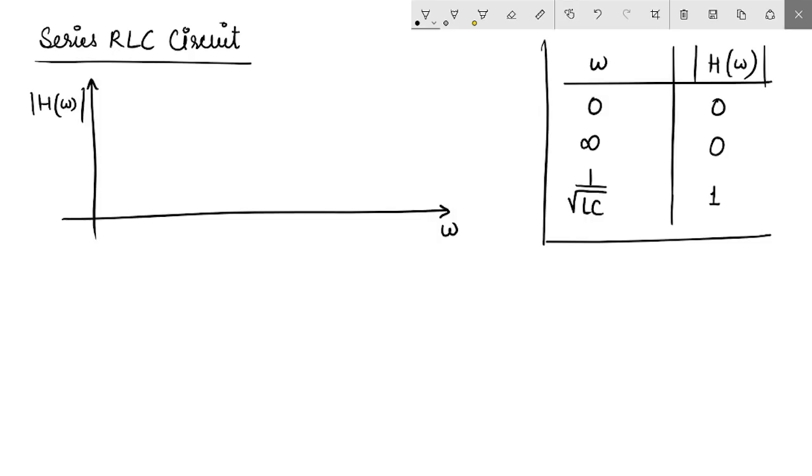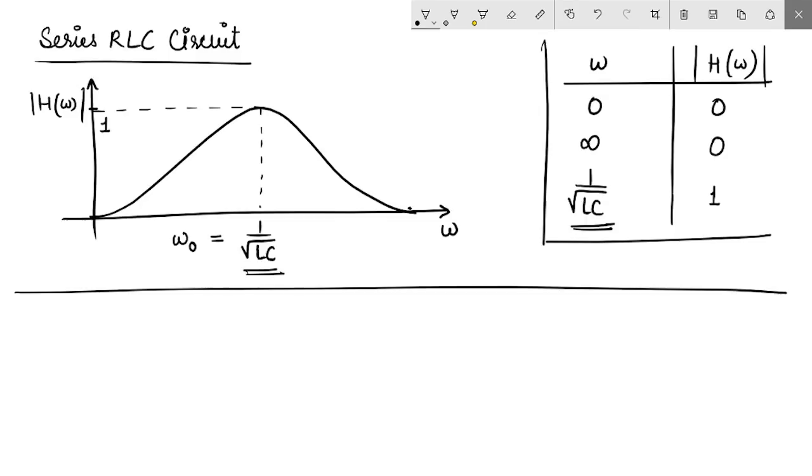So as omega is very less, the amplitude is 0. As omega is very high, the amplitude tends to 0. Somewhere in between, when ω is equal to 1 over square root LC, the magnitude becomes equal to 1. This frequency is called the resonant frequency of this RLC circuit. What is the meaning of resonance here?